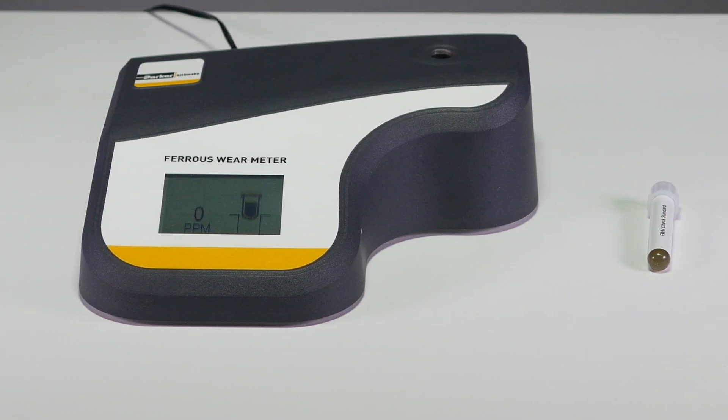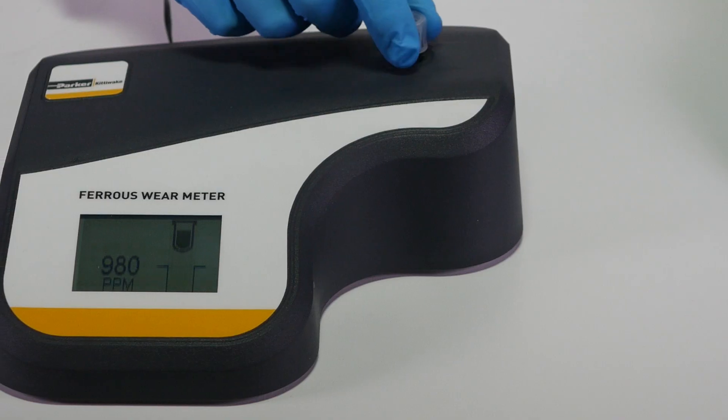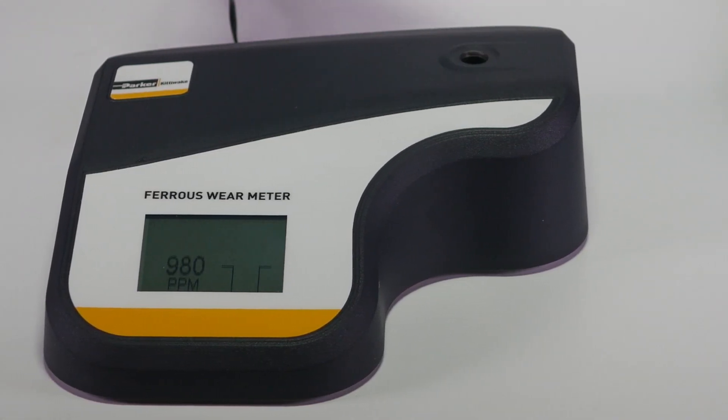Parker Kittywake's Ferris wear meter provides users with a quick, simple to operate device that measures Ferris wear debris in oil samples.